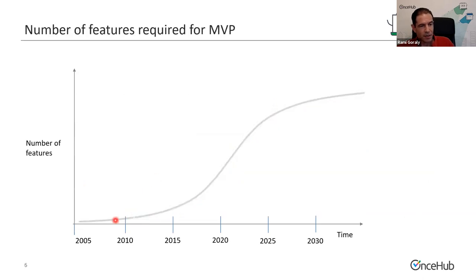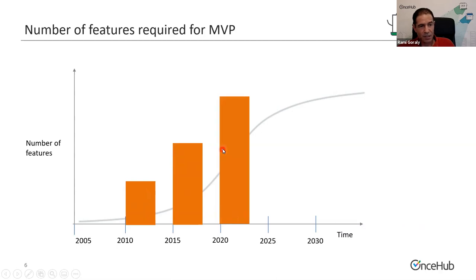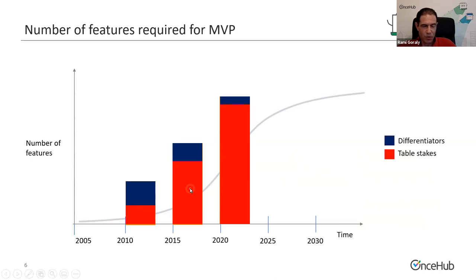Another way to look at the same adoption curve is to see the number of features required for the minimum viable product. If you were launching your MVP in the optimal time window, you would need a certain amount of features. Starting in 2015, you would almost double that. Starting now, you would almost triple the amount of features. It's not just the quantity of features — it's what those features are composed of in terms of differentiators and table stakes. If you launch in the optimal window, most of your features are differentiators. Launching in 2015, most are table stakes with even fewer differentiators.